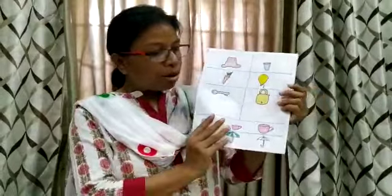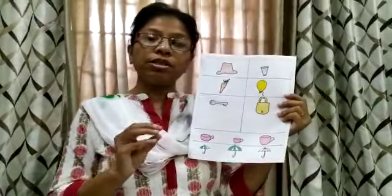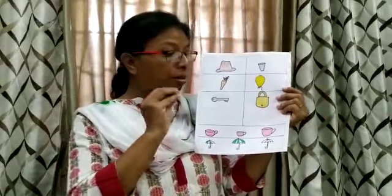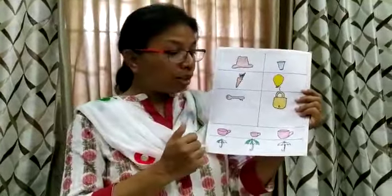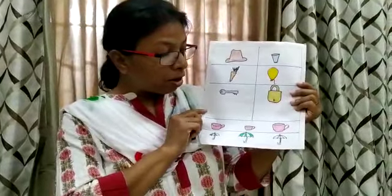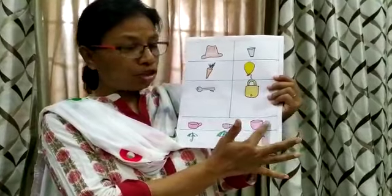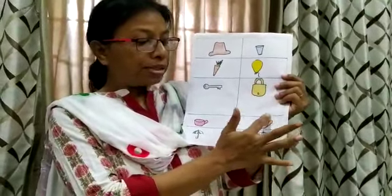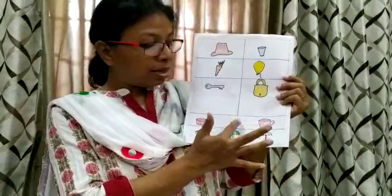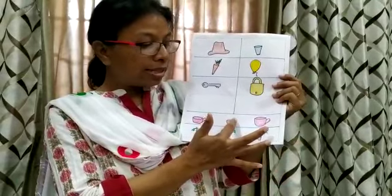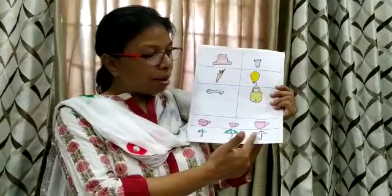Now we are going to compare among three objects — which is the smallest and which is the biggest. Can you see three pictures? Among all three, the last one, the last cup, is the biggest, and the middle one, the second picture, is the smallest. Now here can you see three umbrellas.